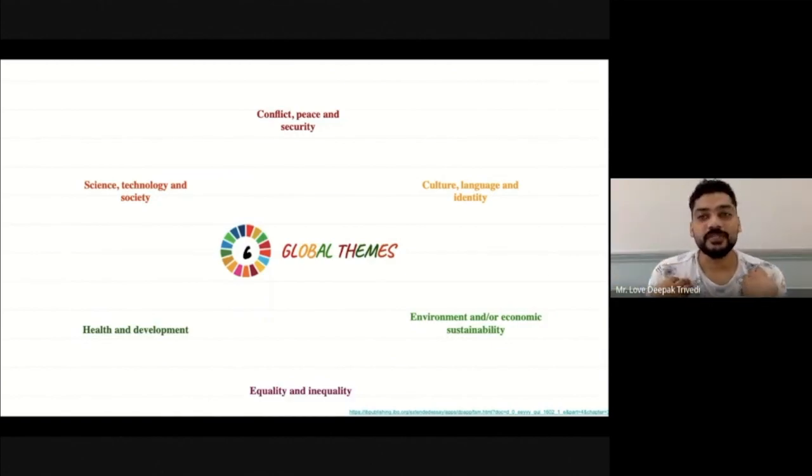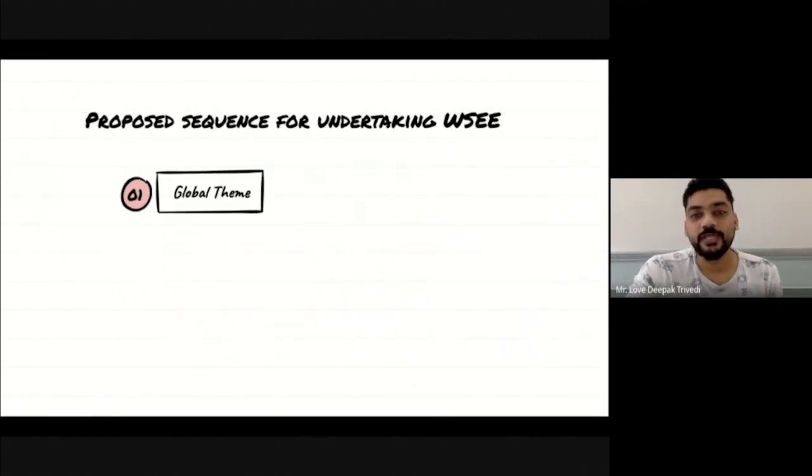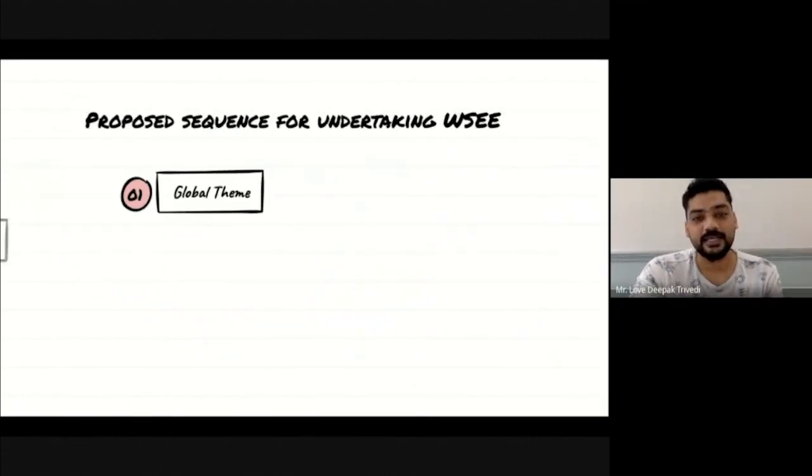If I am good at physics and maths, I should not restrict myself. I am going to choose a theme. You are doing it the other way around. This is the proposed sequence that you should take while doing a world studies extended essay. Choose a global theme, find a topic.